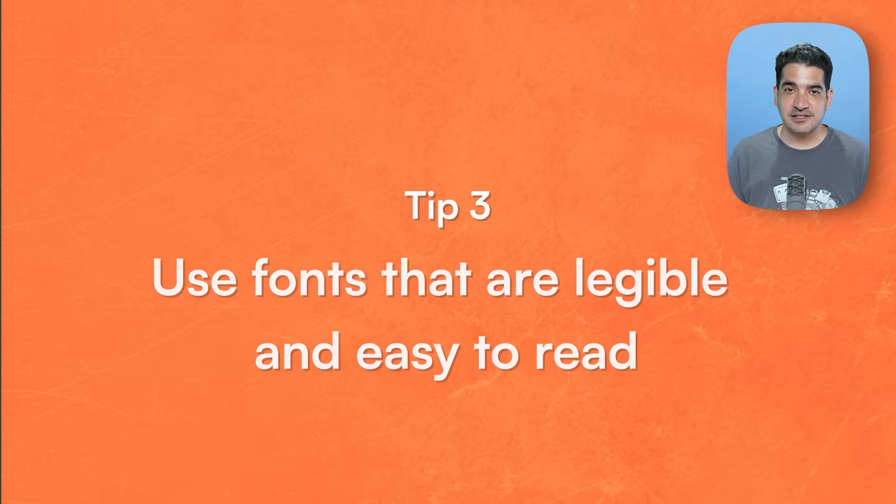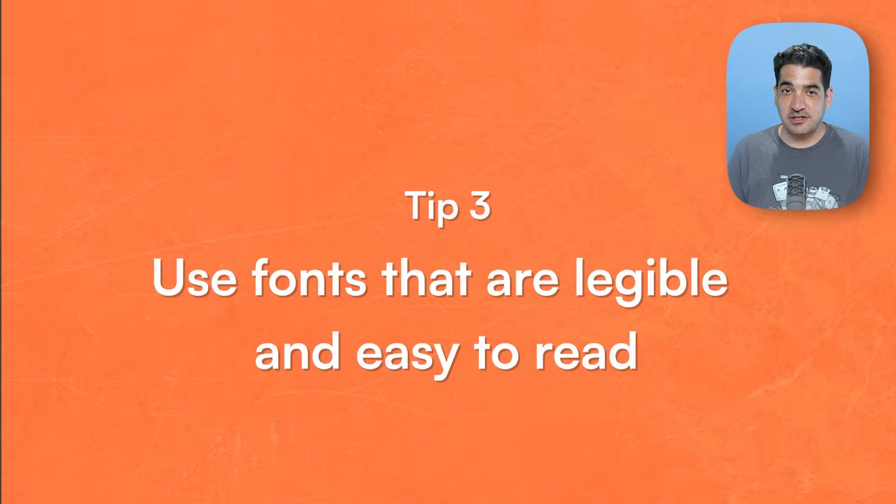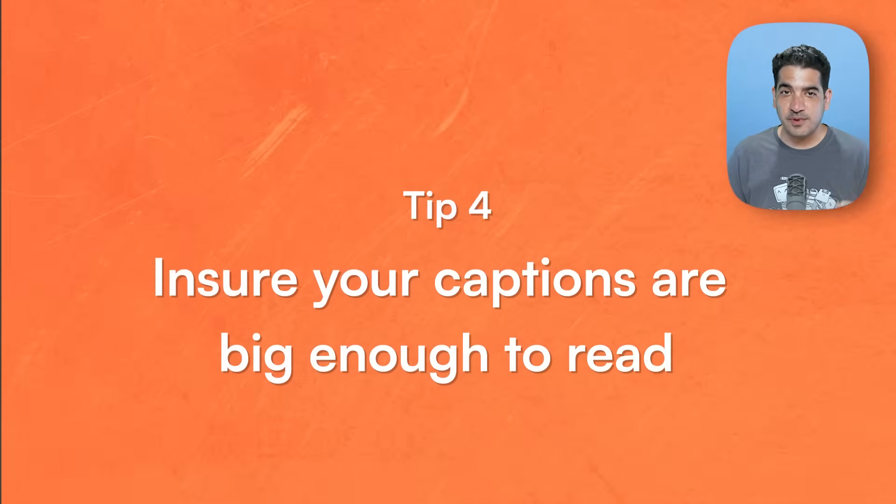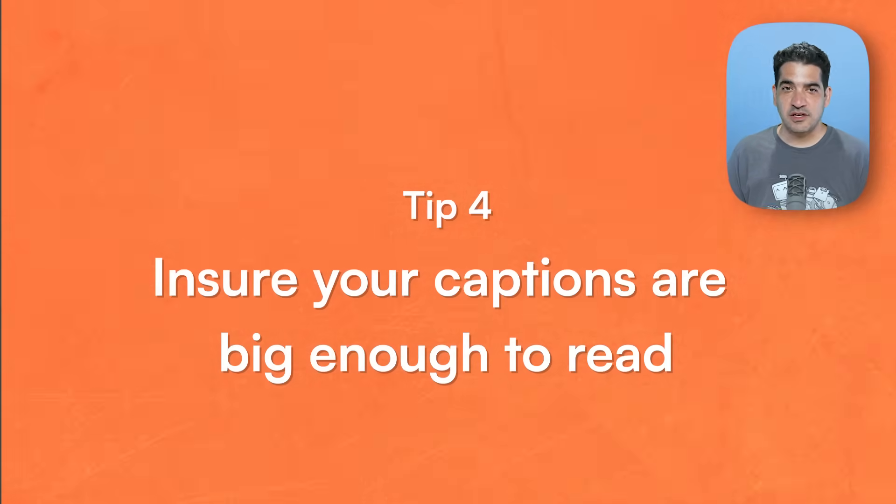Number three is to use fonts that are legible and easy to read. Fonts that are too thin, condensed, or stylized make it really hard for the machine to see and could be ignored — and we don't want that. Number four is ensure your captions are big enough to read. If your text is large enough for a human eye to read, it's probably okay for the machine. But if it isn't, Apple won't be able to see it and that's a problem.